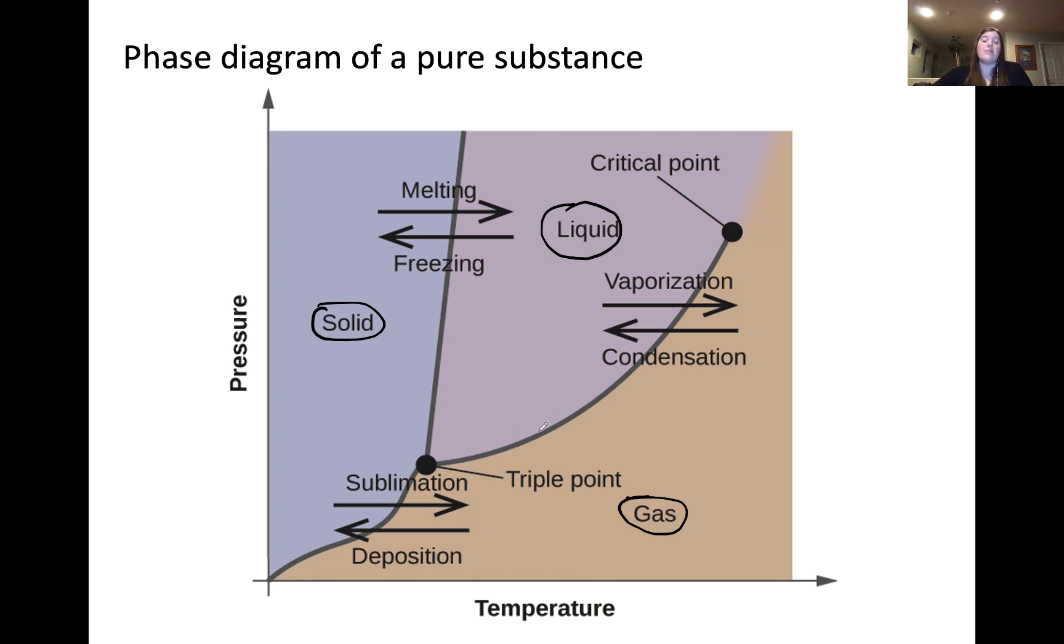Similar analysis can be done for the liquid-gas line, which indicates the point at which the substance vaporizes if going from liquid to gas, or condenses if going from gas to liquid. Another key point is the line between solid and gas, which is referred to as solid-gas equilibrium line, which indicates processes of sublimation, going from solid to gas, or deposition, going from gas to solid. In all of these cases, this line is described by a set value of pressure and temperature.